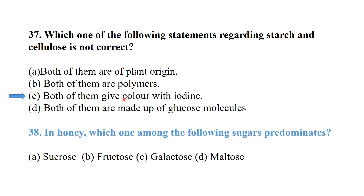Which of the following statements regarding starch and cellulose is not correct? The statement that both give a color reaction with iodine is incorrect — cellulose does not give a color reaction with iodine. In honey, which sugar predominates? Fructose is the dominant sugar in honey.